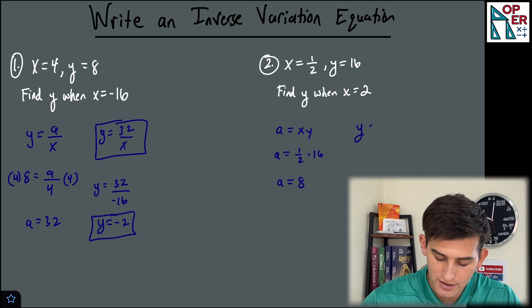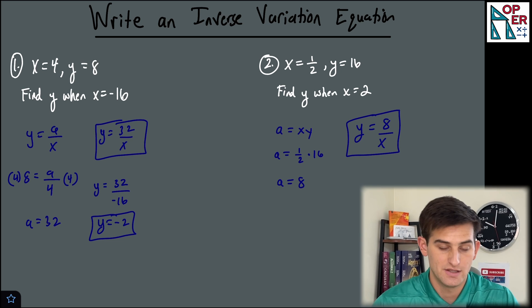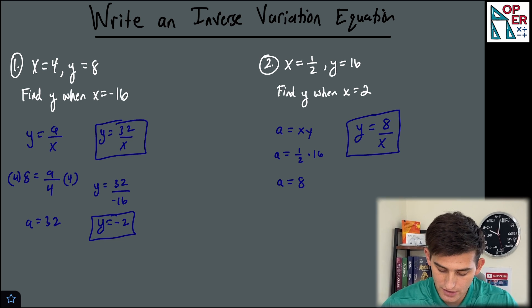So now we can use that and go ahead and write our equation of y is equal to eight over x. So that's another way to figure out our inverse variation equation.